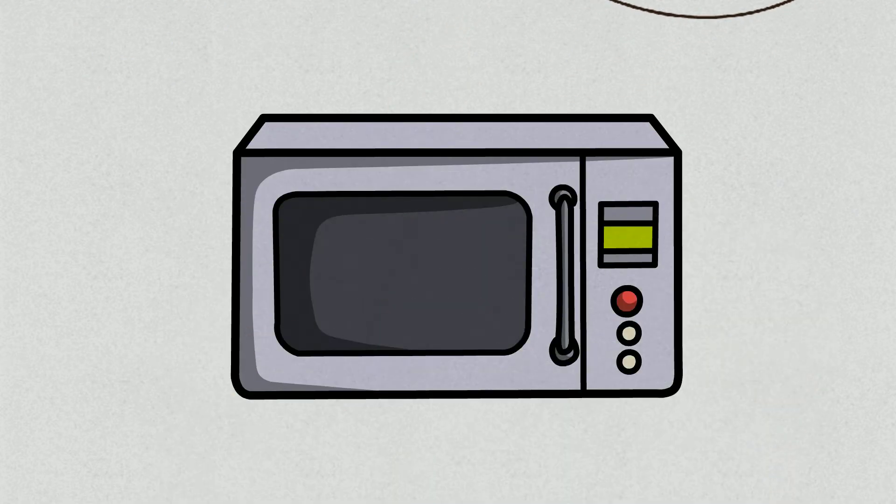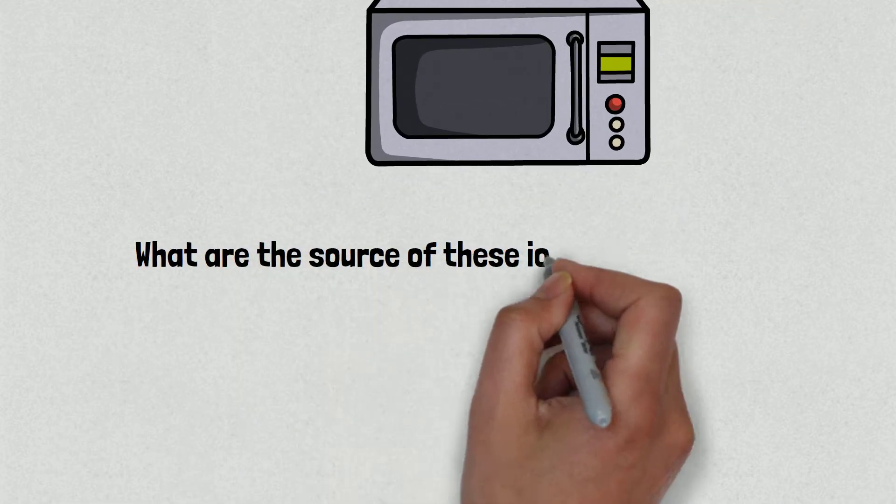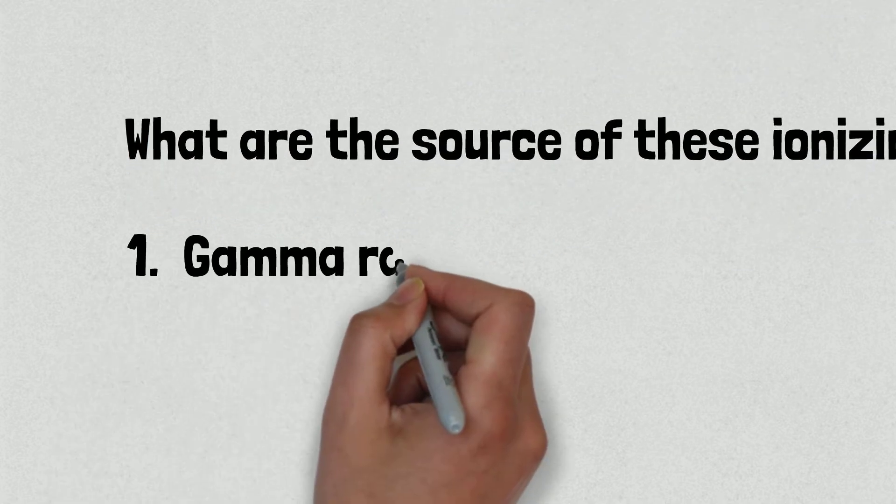But on the other hand, we have microwaves which help us to heat up food quickly. What is the source of this ionizing radiation? Number one is gamma radiation emission.